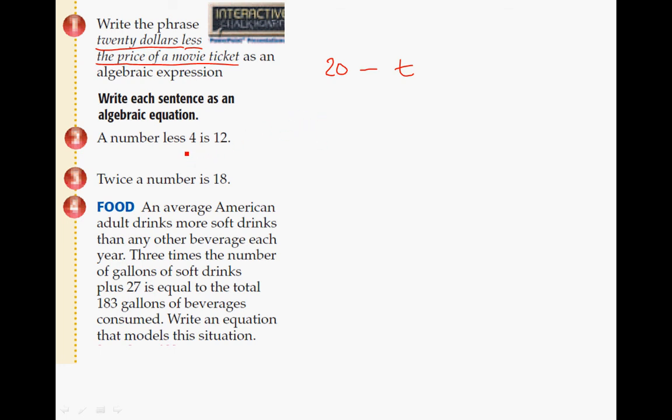Let's try this one. A number less 4 is 12. A number, you can call it whatever you want, I'll call it N. Less, we know that's going to be subtraction. 4, so that's going to be 4, is equals 12. So N minus 4 equals 12.